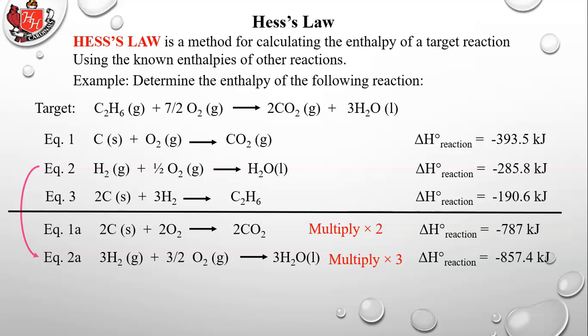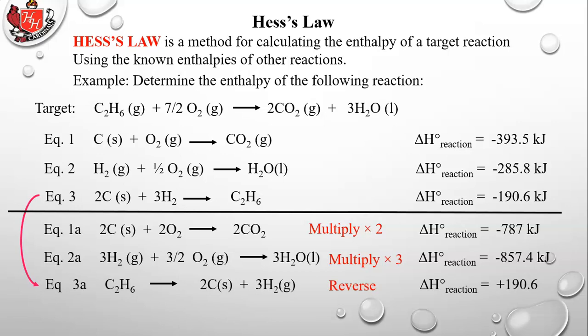Finally, C2H6 appears only in equation 3, but it's on the right side there while it's on the left side of the target. Both have one mole, so no multiplication is needed, but we reverse equation 3. Putting C2H6 on the left gives us equation 3a, and reversing changes the sign: the enthalpy goes from negative 190.6 to positive 190.6 kilojoules.